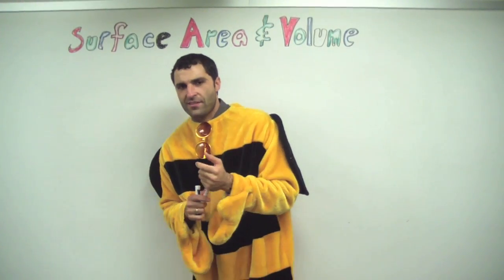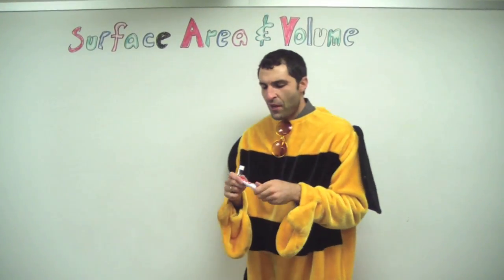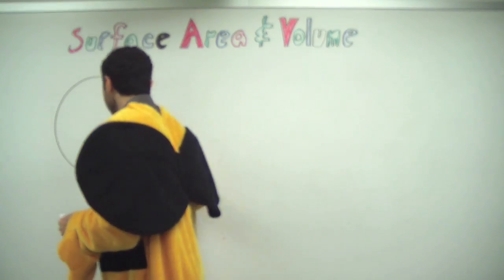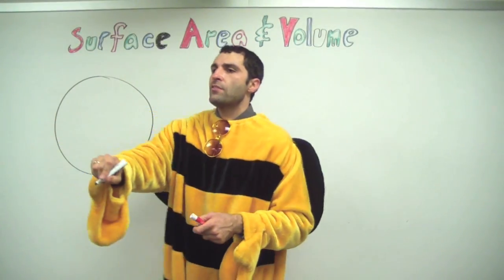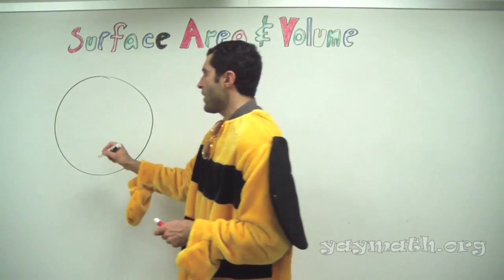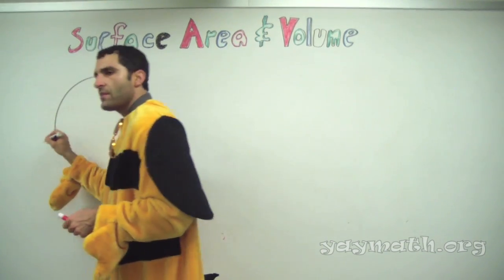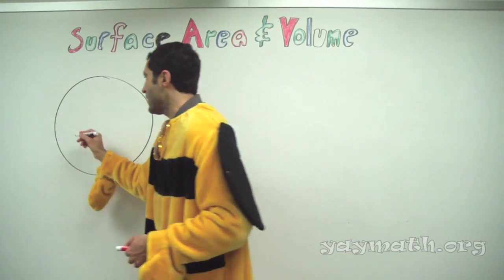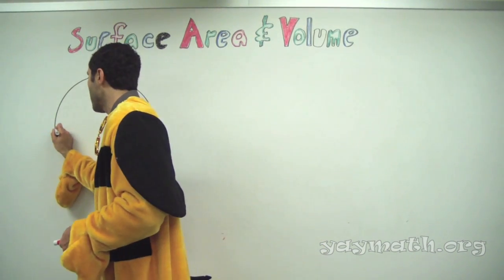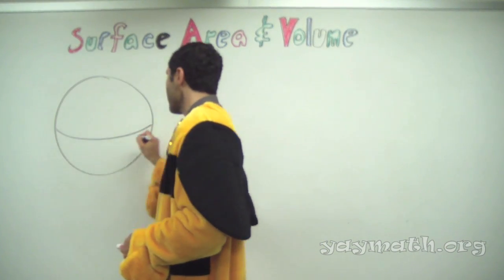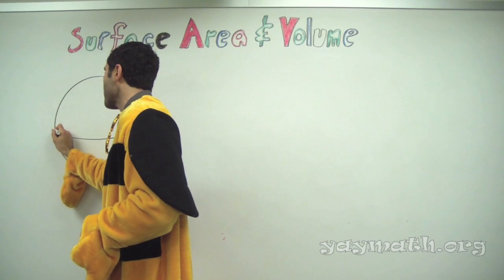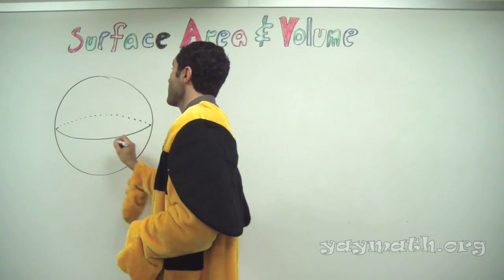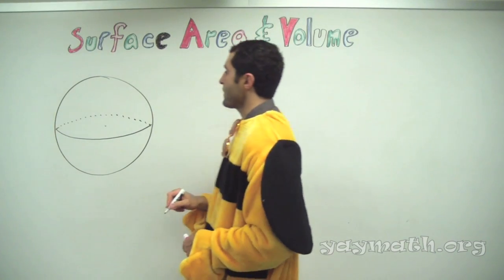Surface area and volume of spheres. Let's draw a sphere — a big circle — and add a little belt, like an equator. Now we're doing surface area and volume of spheres, and we'll start with surface area.